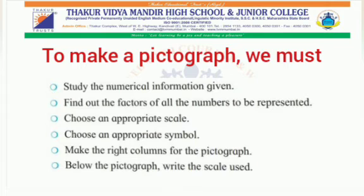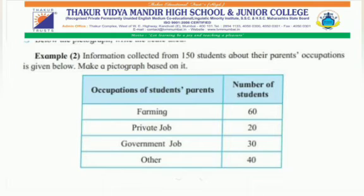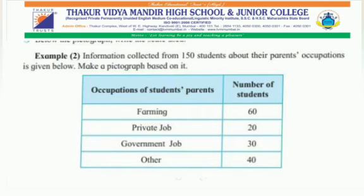Let us understand more with the help of an example. Information collected from 150 students about their parents' occupation is given below. Make a pictograph based on it. The information of 150 students has been given. The occupation of the students' parents: farming is 60 students, private job is 20, government job is 30, and others are 40. We can see the numbers are divisible by 2, 5, and 10.